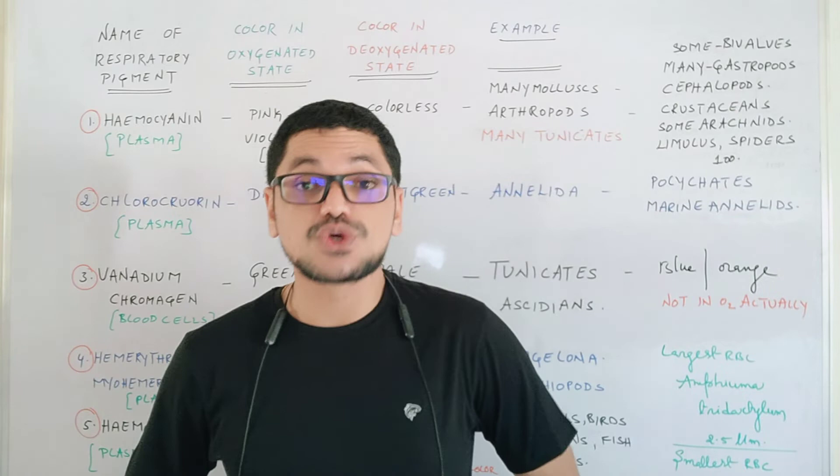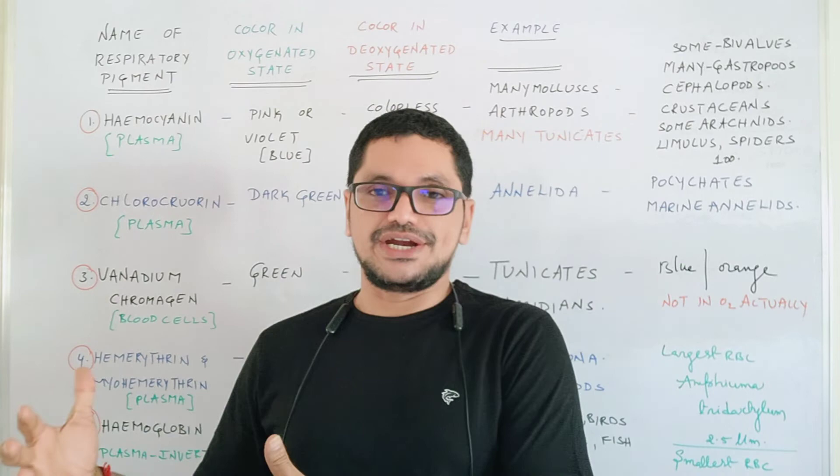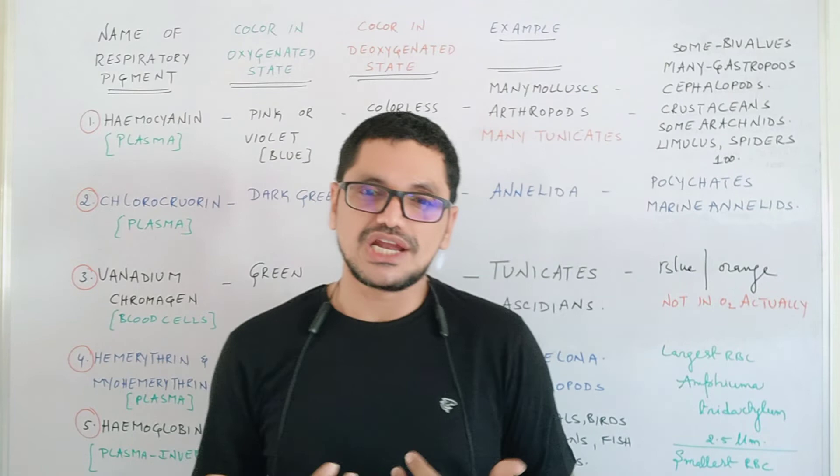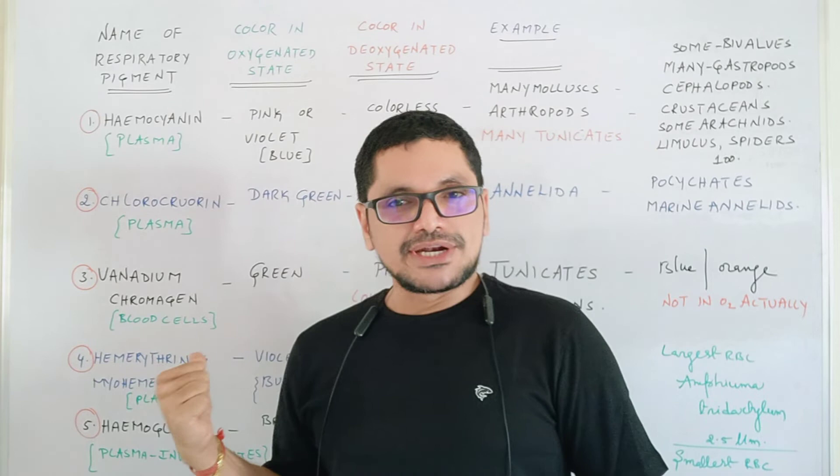Hemoglobin carries oxygen from the source to the target — atmospheric oxygen enters the lungs and from there it is distributed to all body parts with the help of hemoglobin. In the case of insects, this important hemoglobin is absent.